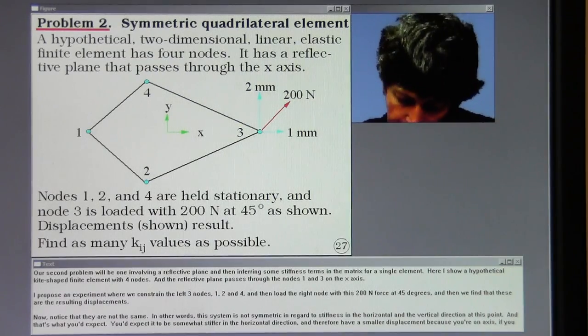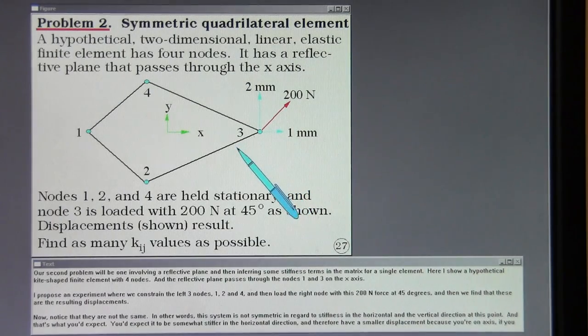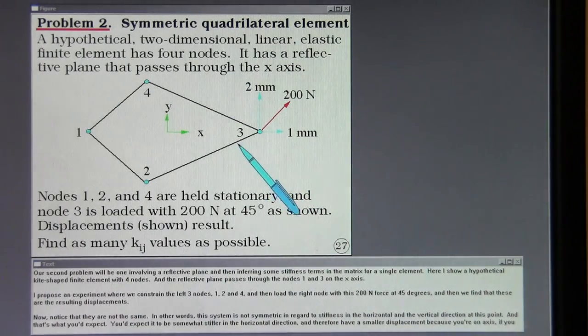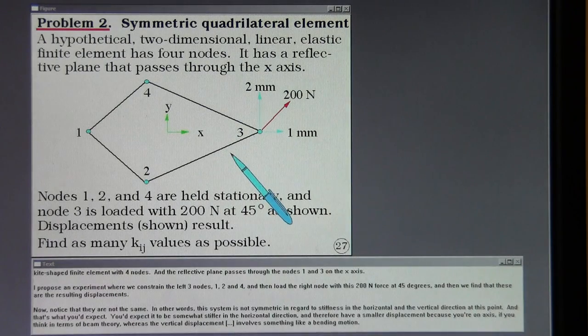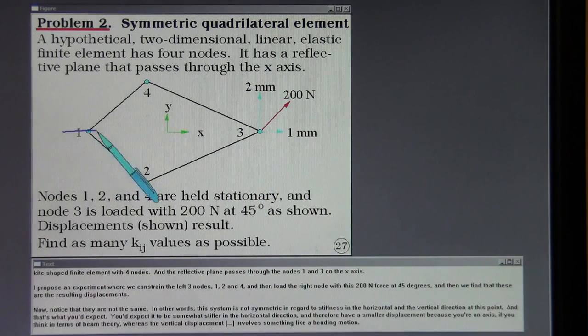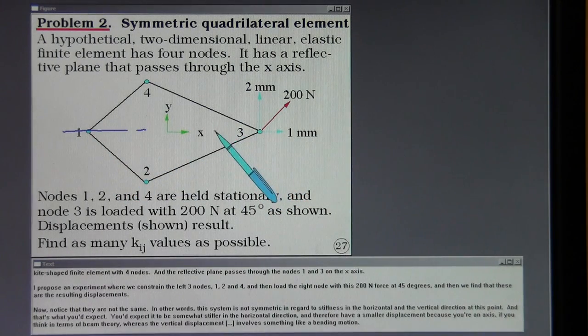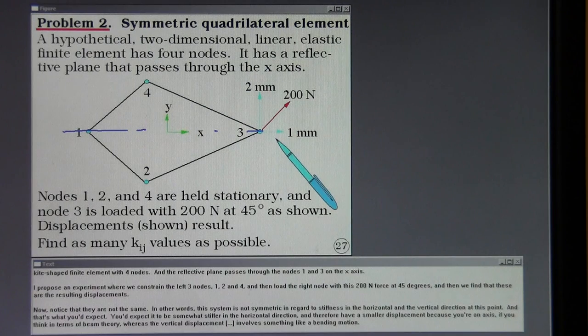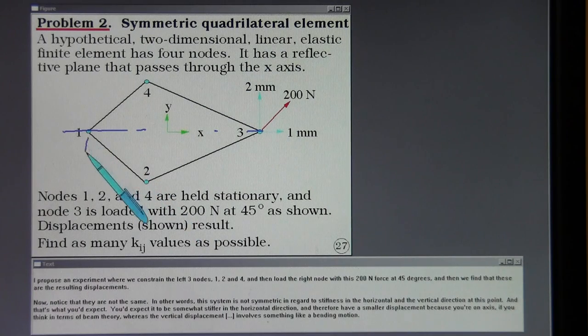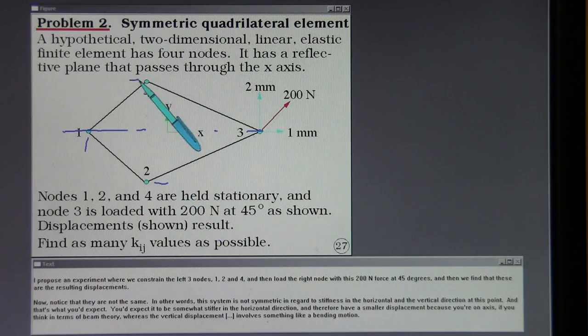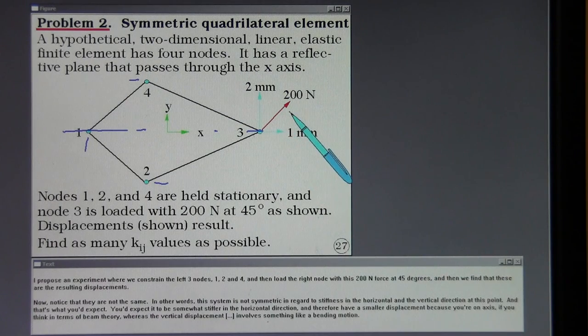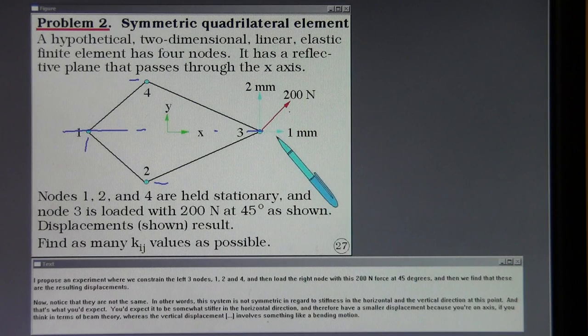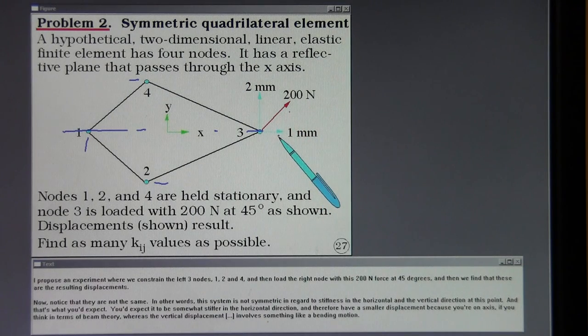Our second problem will be one involving a reflective plane and then inferring some stiffness terms in the matrix for a single element. Here I show a hypothetical kite shaped finite element with four nodes and the reflective plane passes through the nodes one and three on the x axis. I propose an experiment where we constrain the left three nodes. One, two, and four. And then load the right node with this 200 newton force at 45 degrees. And then we find that these are the resulting displacements.